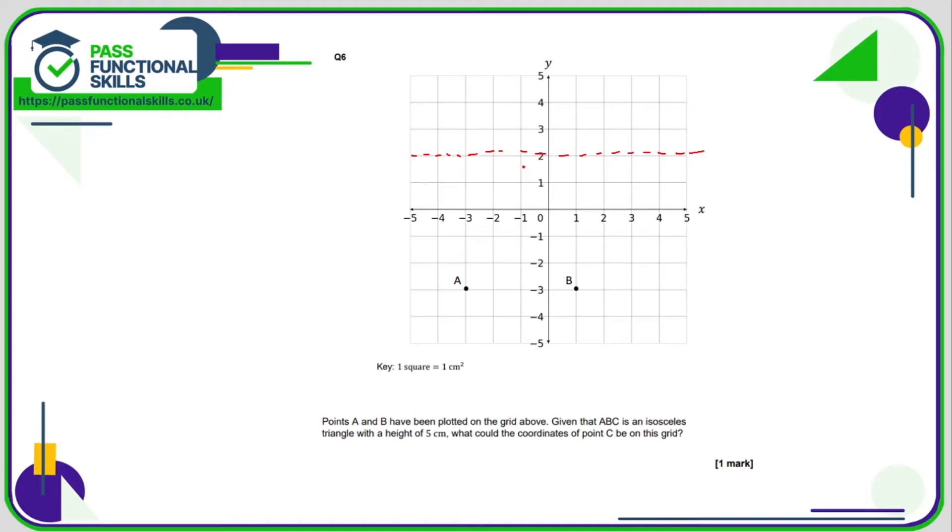So two across from A and this point here. So if I call this point C, AC is the same as CB and that's a height of one, two, three, four, five. And the coordinates of C are going across to negative one up to two, so minus one, two.